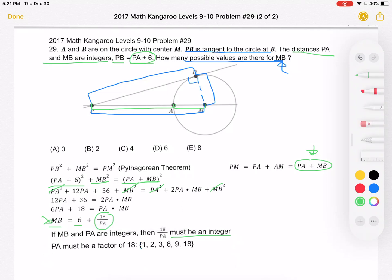So that means that PA must be a factor of 18 so that 18 over it is an integer. So we can have PA be 1, 2, 3, 6, 9, or 18. And that means that we have 6 values for PA. So if we have 6 different values for PA then that means that we should have 6 possible values for MB.